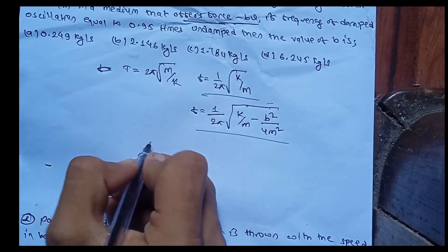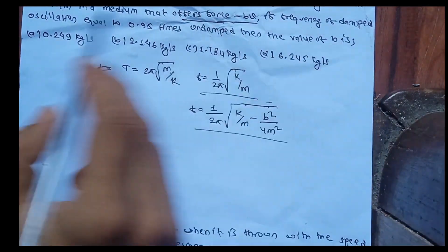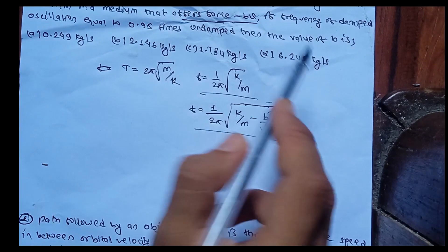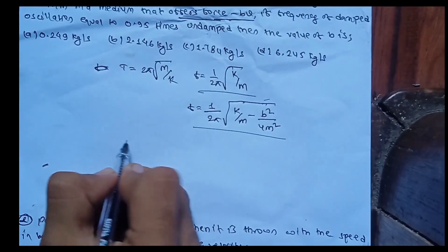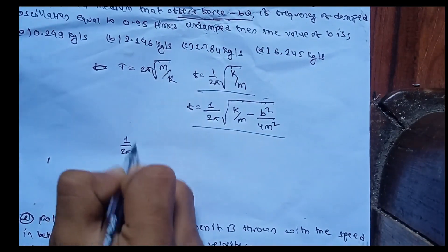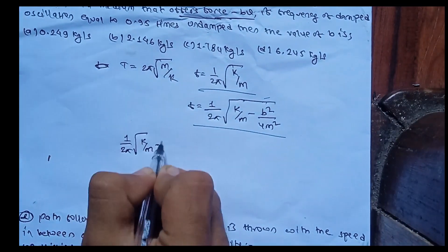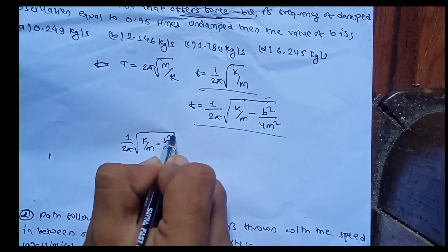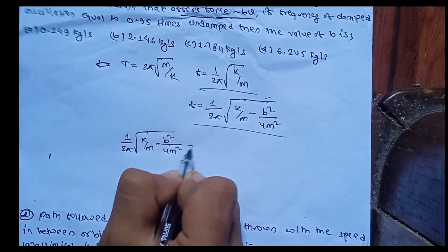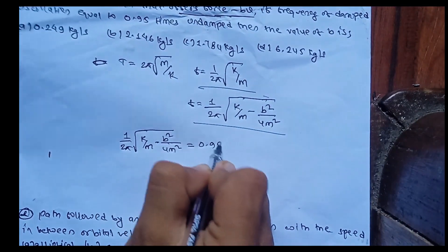In this case, the frequency of damped oscillation is equal to 0.95 times the undamped oscillation. So: (1/2pi) * sqrt(k/m - b²/4m²) = 0.95 times (1/2pi) * sqrt(k/m).